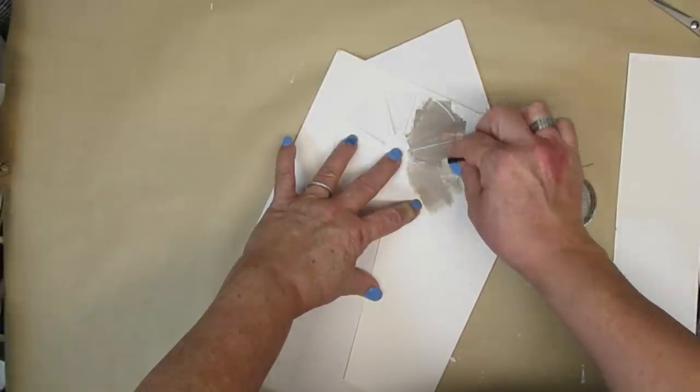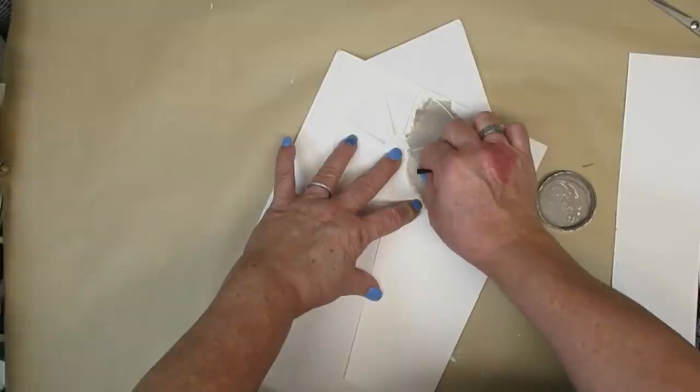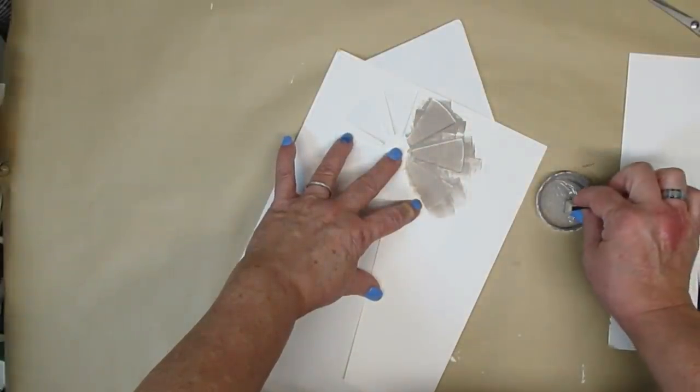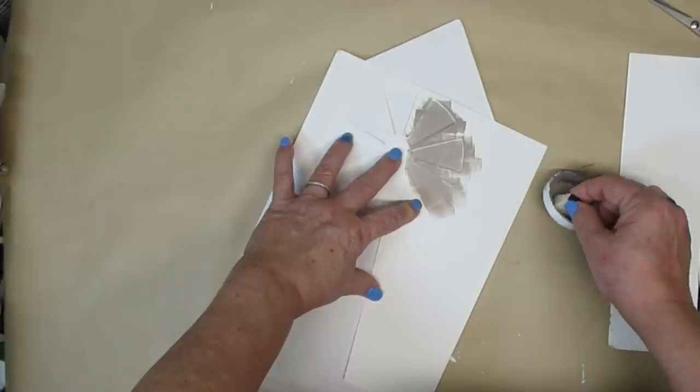I'm not giving it full coverage. I want it to be kind of variegated in the amount of color that's on there and have some lighter spots and some darker spots.